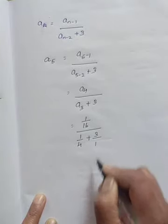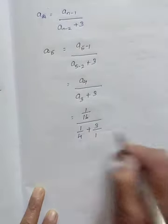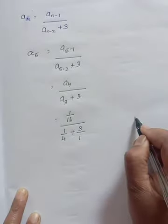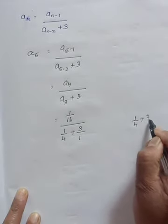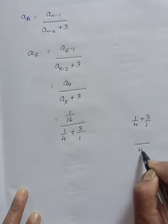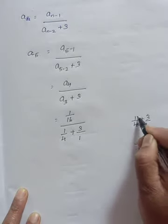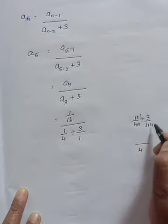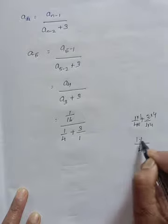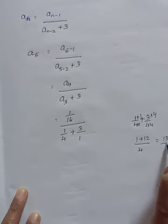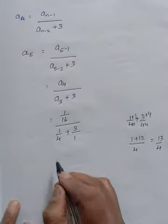3 means 3 by 1. So this 1 by 4 plus 3 by 1, I will solve here. 1 by 4 plus 3 by 1, LCM is 4. 4 to become 4 into 1 into 1, 1 to become 4 into 4 into 4. 1 plus 12, that is 13 by 4.